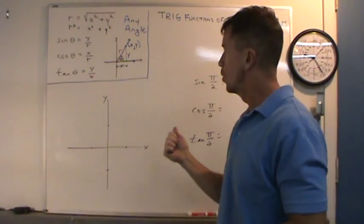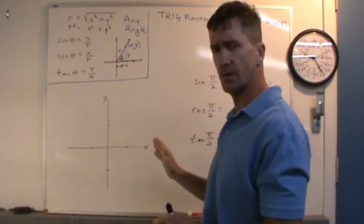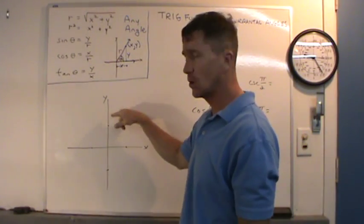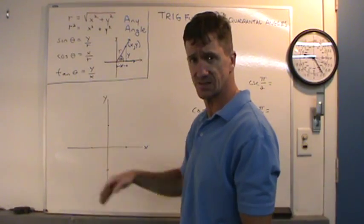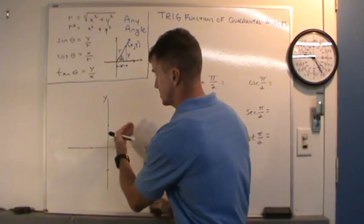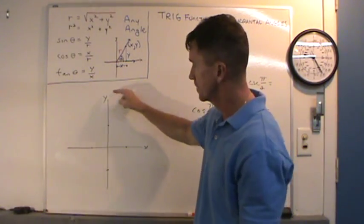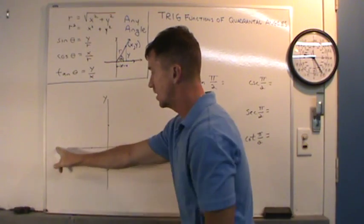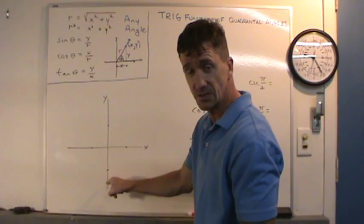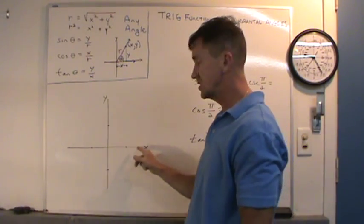Hi everyone, in this video we're going to evaluate the trig functions of quadrantal angles. Quadrantal angles are angles such that the terminal side lies on the y-axis or x-axis. For instance, in standard position, an angle that stops at 90 degrees or pi over two, at 180 degrees or pi, at 270 degrees or 3 pi over two, or all the way around at 360 degrees or 2 pi.